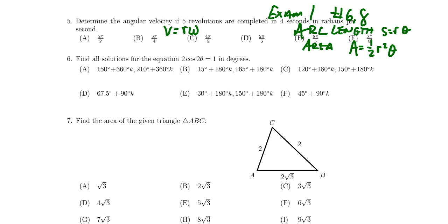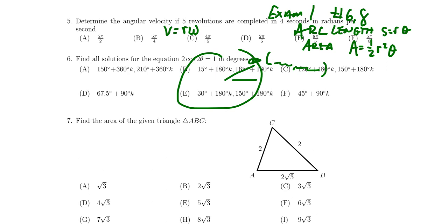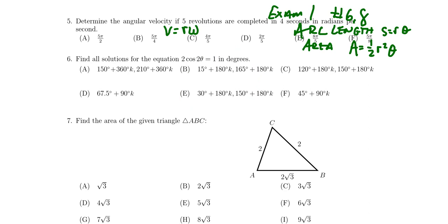Another related question type from exam one, question eight, involves the unit circle: given a point with x- and y-coordinates defining an angle θ, can you find cosine of θ, sine of θ, or tangent of θ? Cosine is the x-coordinate, sine is the y-coordinate, and tangent is their ratio. So how does the unit circle give us trigonometry? That's circle trigonometry, and that's what question five is all about.